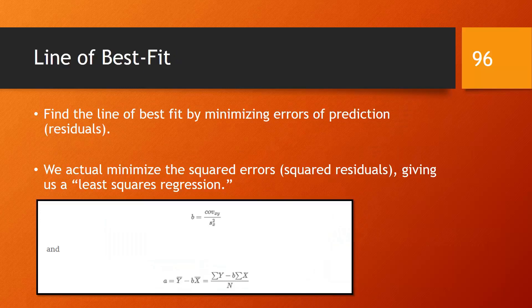As before, we will not sum up the errors. Instead, we will sum up the squared errors. Thus, we are minimizing the squares of the residual, giving us what is called a least squares regression.